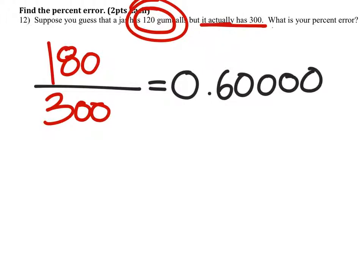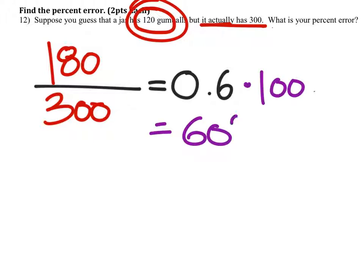Those go on forever, so I'm actually not going to worry about those. So, to change this decimal into a percent, we'll have to multiply it by 100. And that would give us 60%.